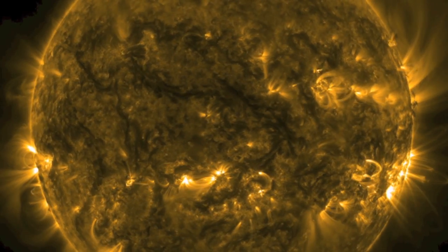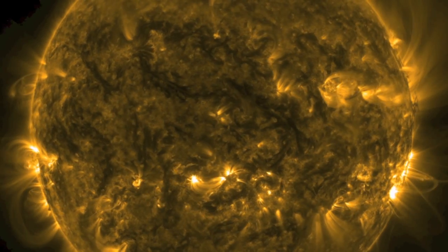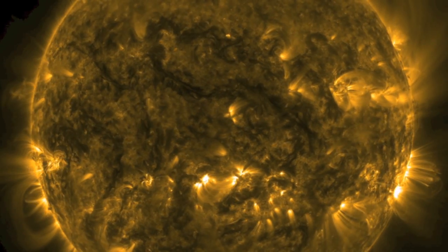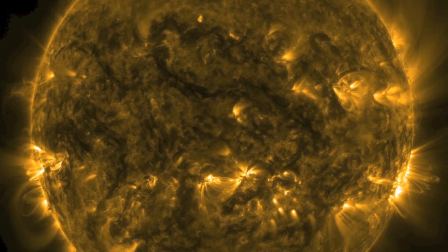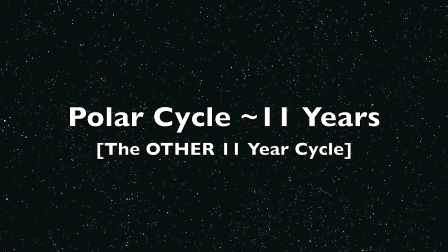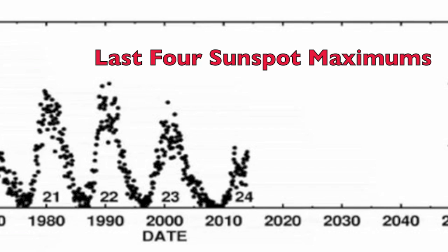The 11-year cycle is seen in terms of maximum and minimum sunspot activity, but there's a matching, simultaneously occurring cycle that follows an opposite pattern. Let's start by looking at the last few sunspot maximums, occurring around 2013, back in 2002, 1991, and 1980.